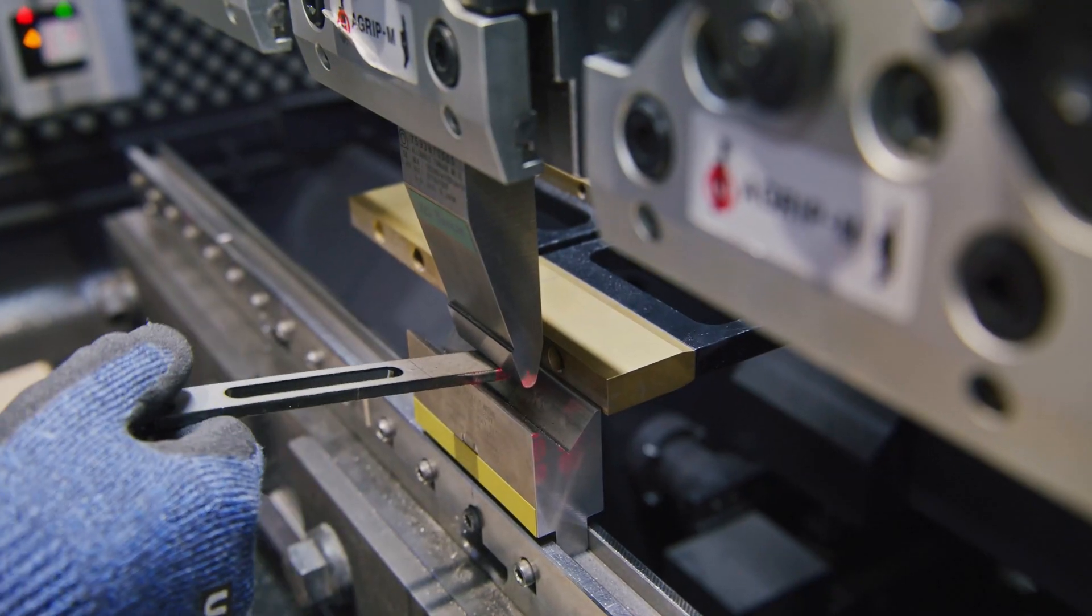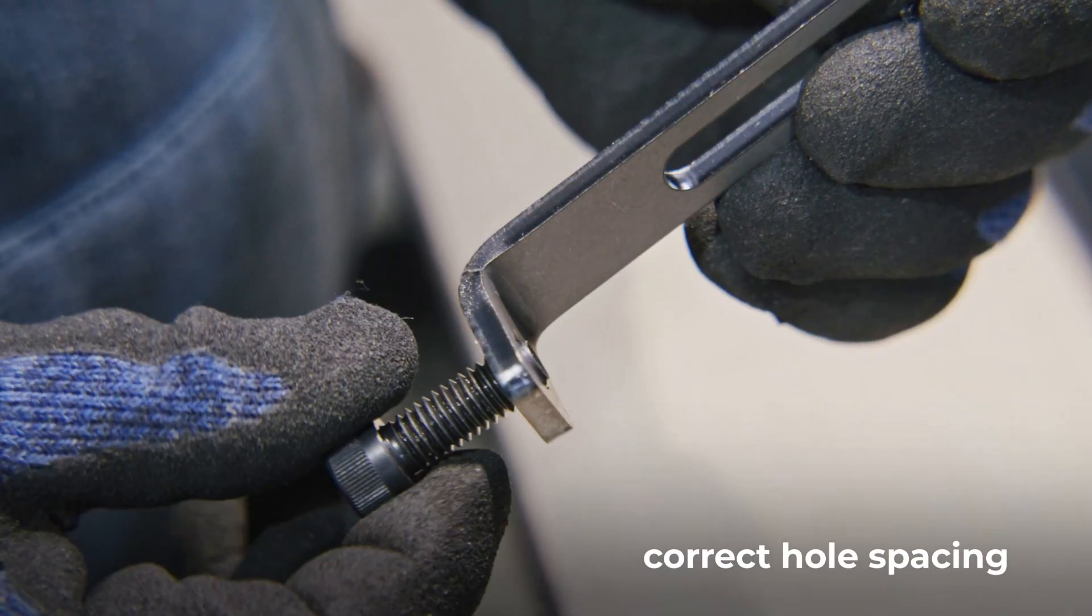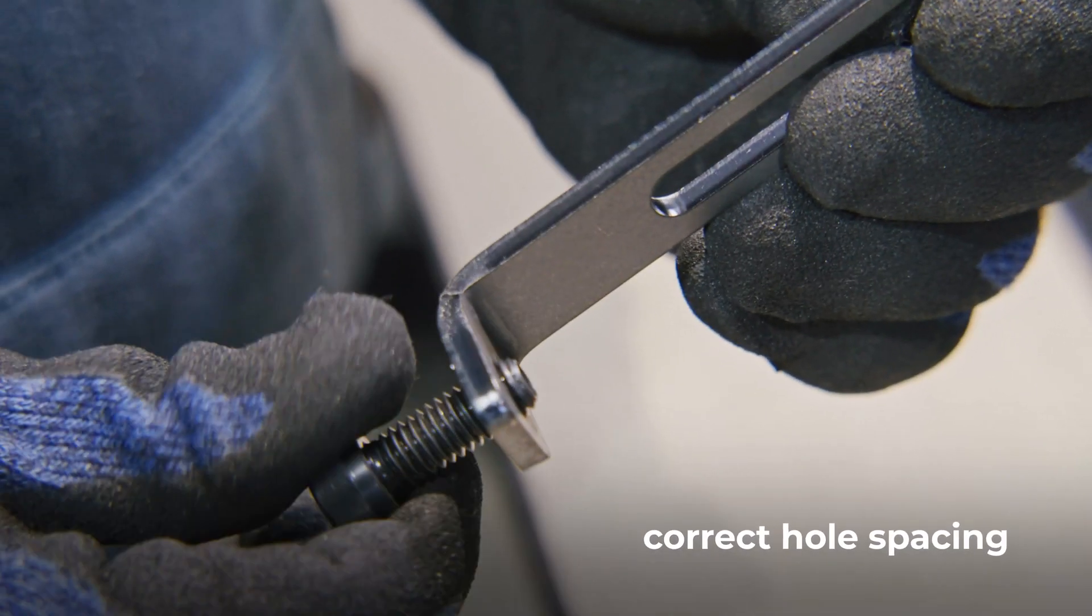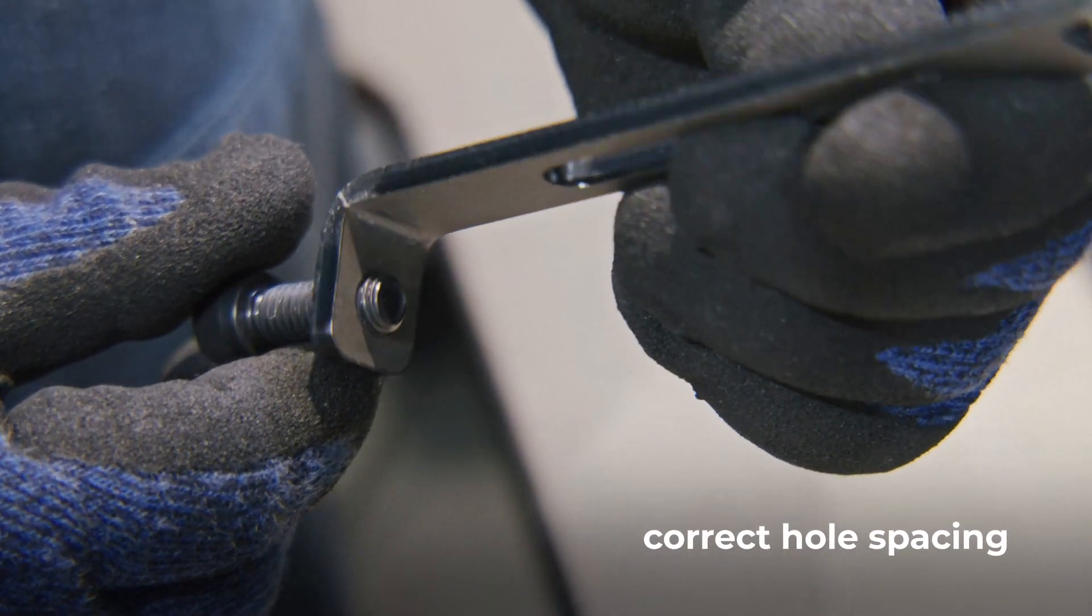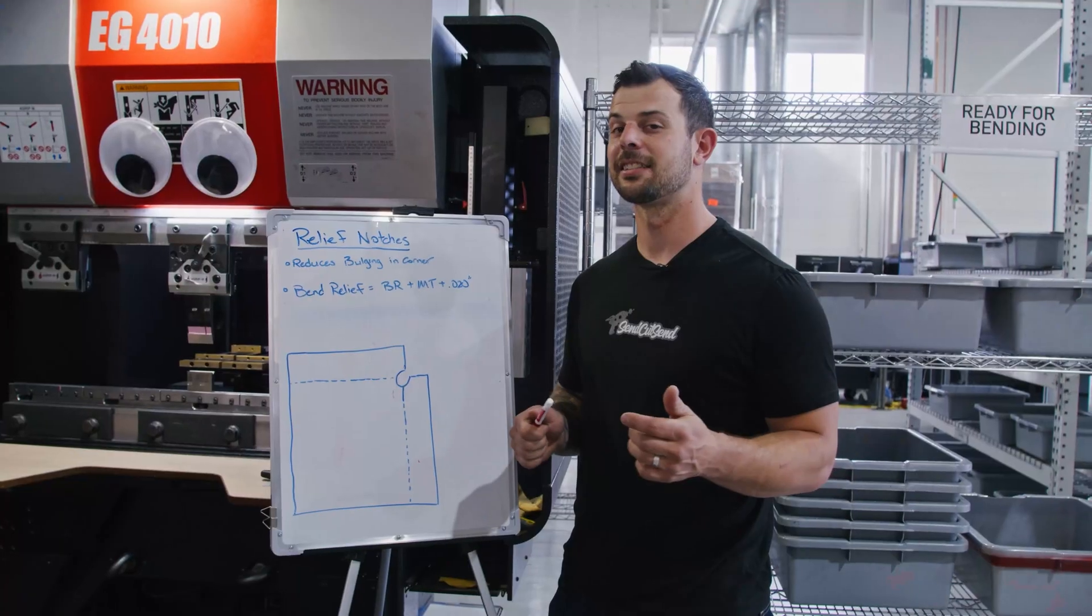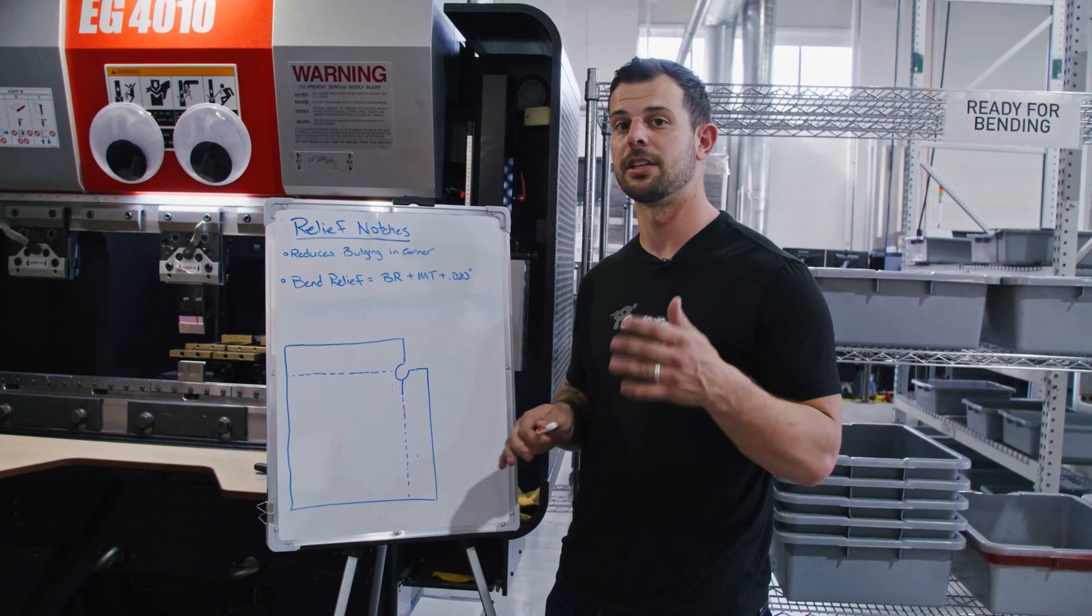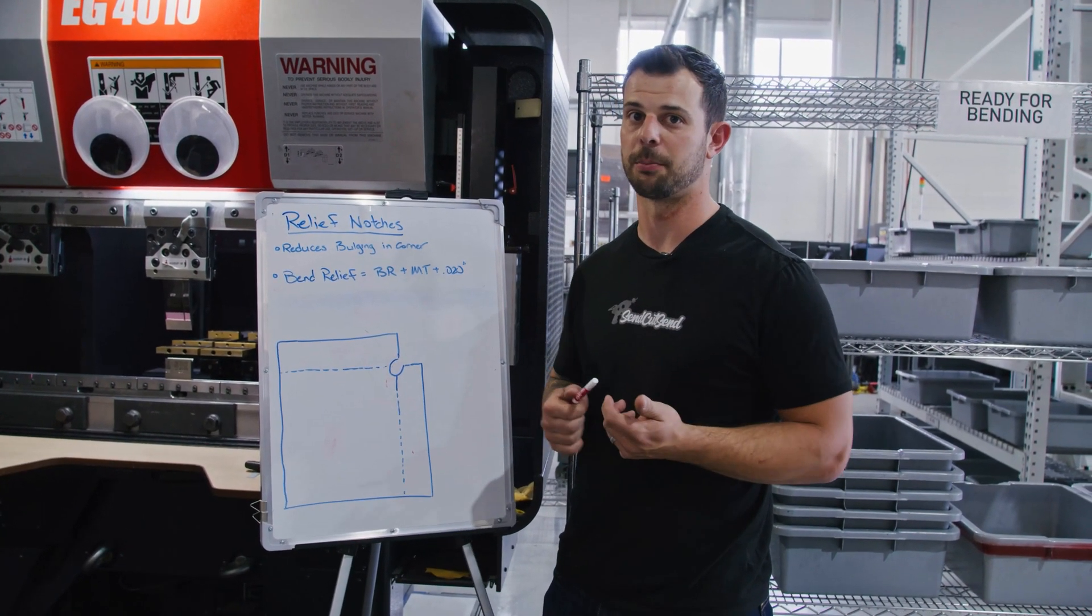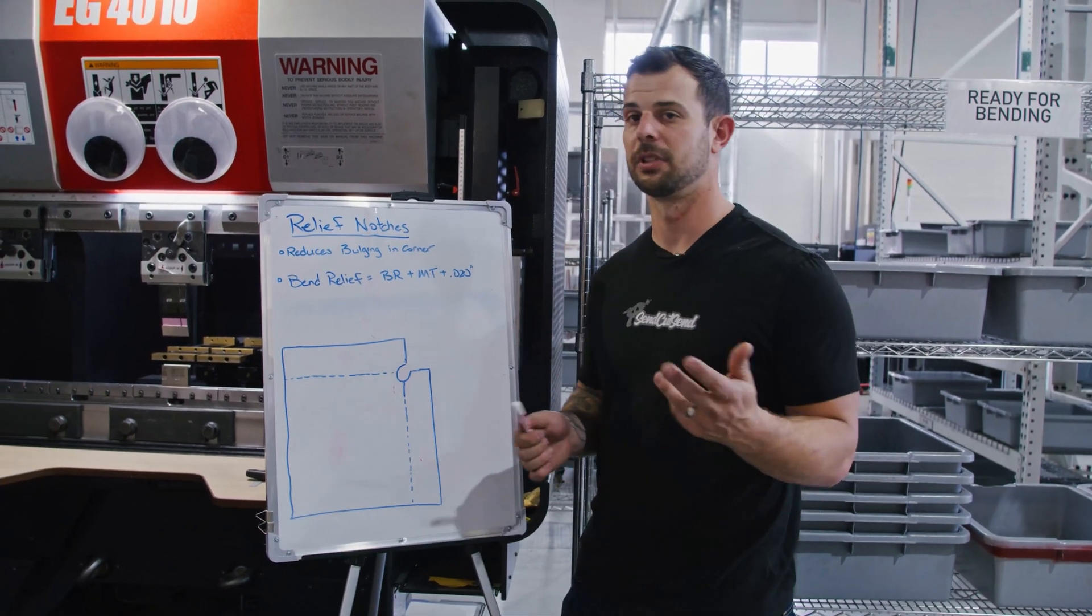We did make it easy for you guys again. If you go to our design considerations on the website, you're going to see some safe distances that you can place features such as holes away from the bend line. Next, let's talk about a feature that we can put into the design that will actually help with the bending process, specifically relief notches.